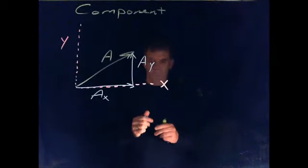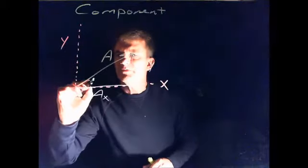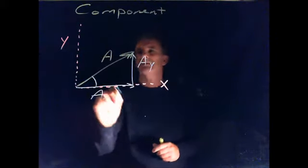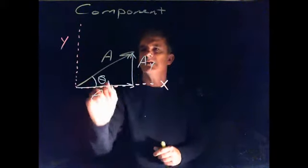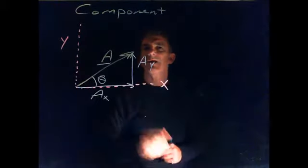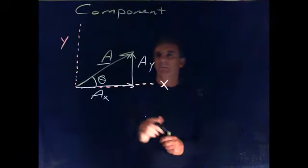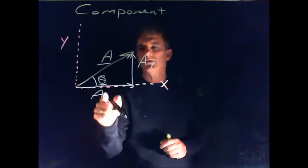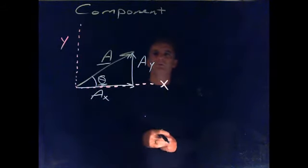This little arrow is the amount of A in the Y direction. We have a right triangle. If we know this angle, and I'm going to call that theta, so we know that part of the triangle, our hypotenuse, we know the angle, we can figure out the other two sides.